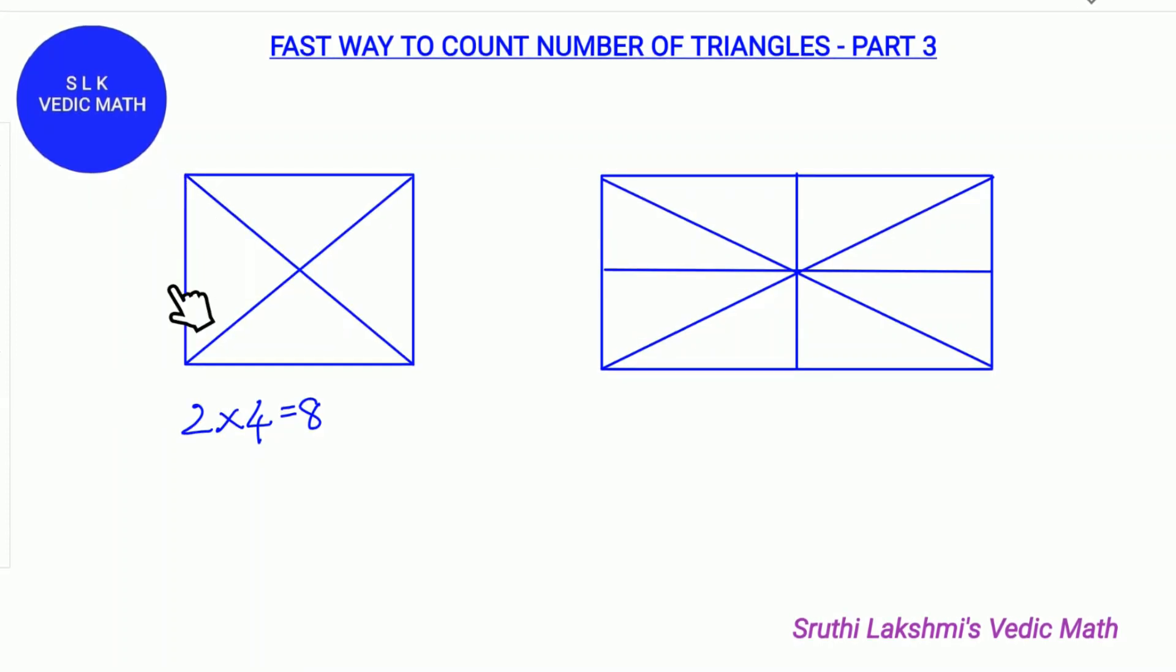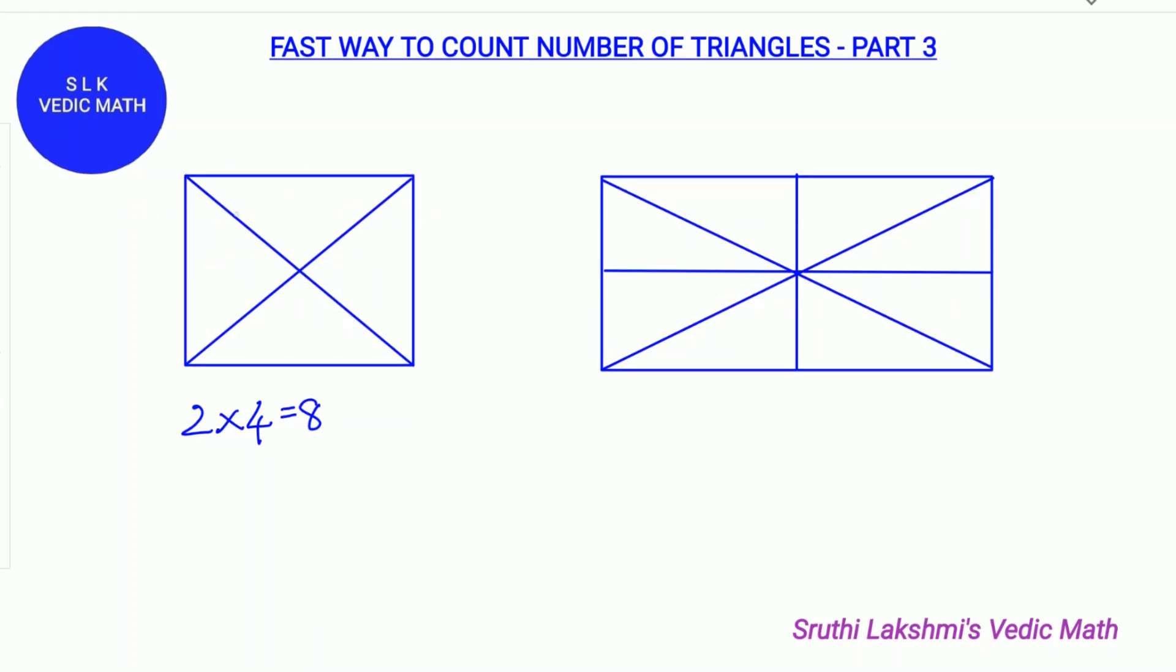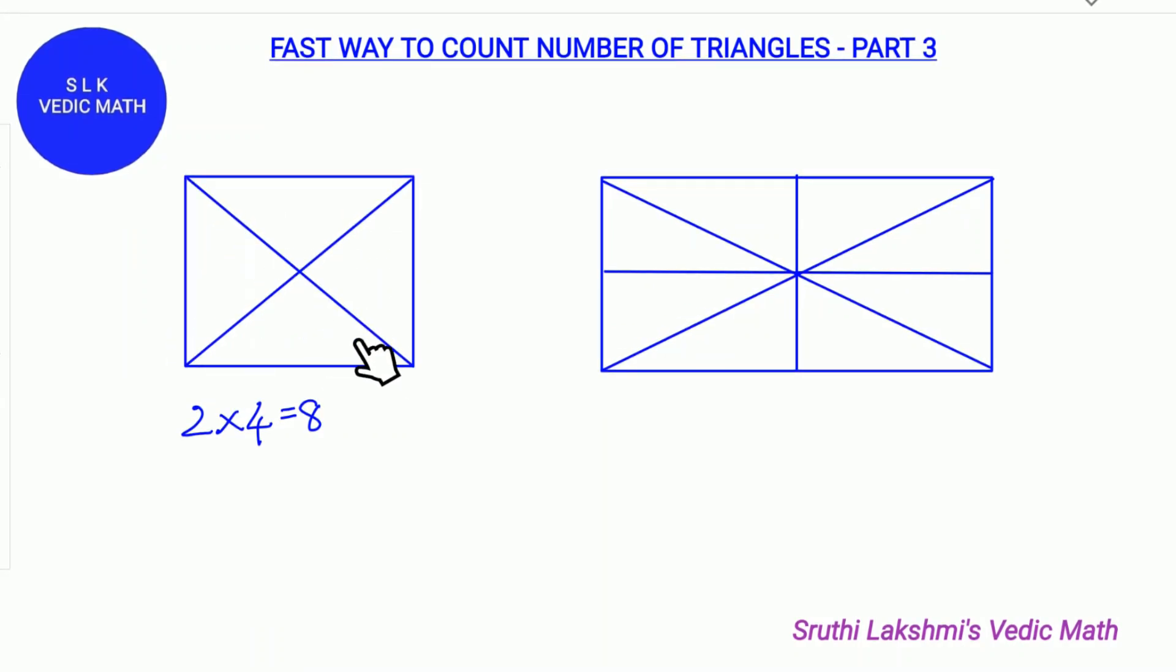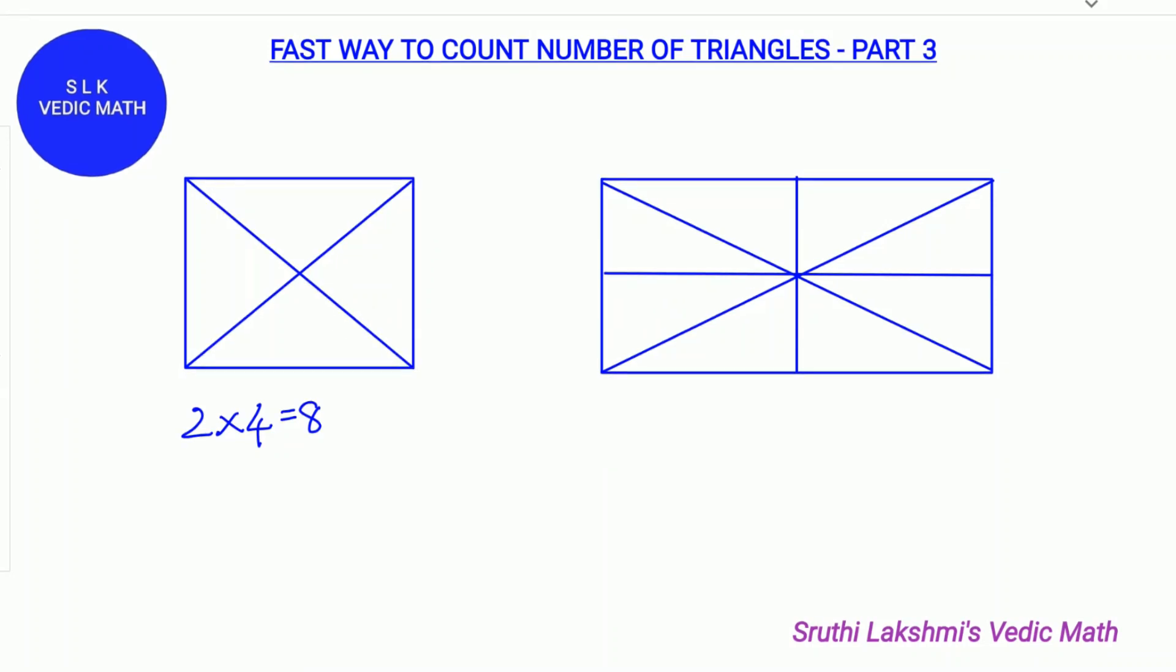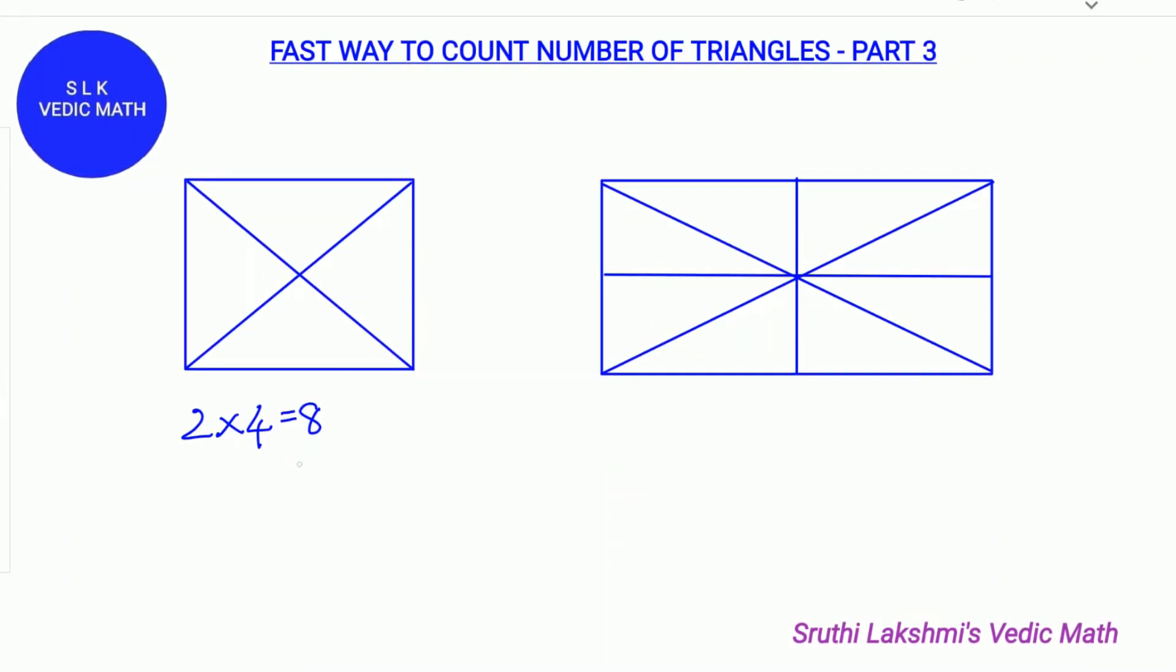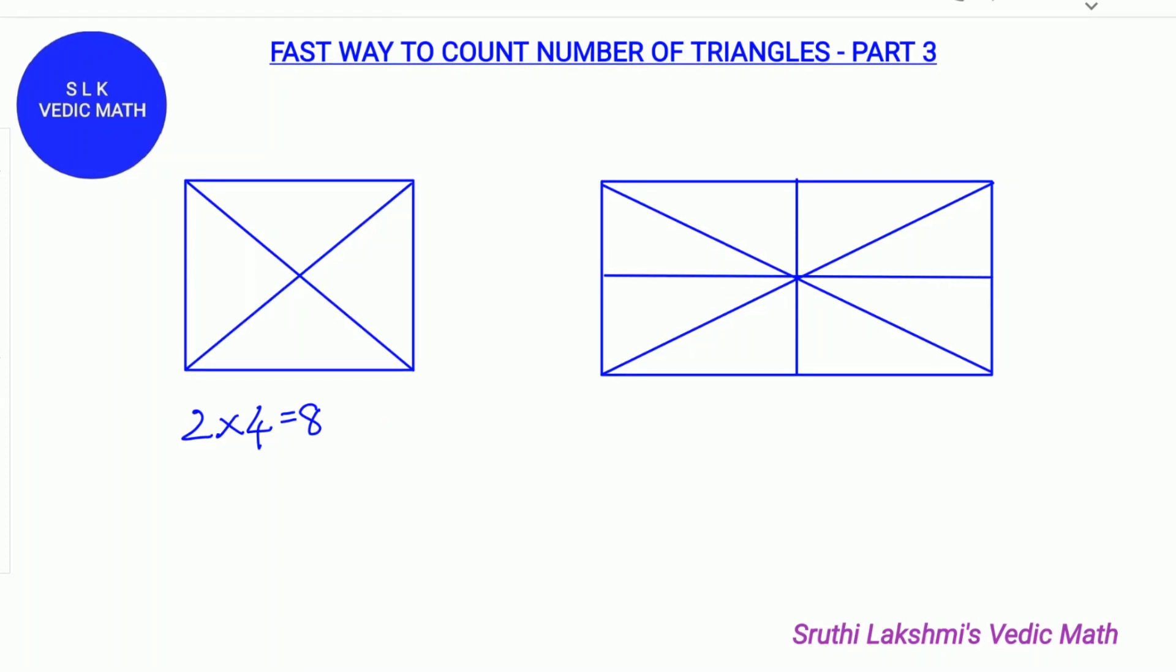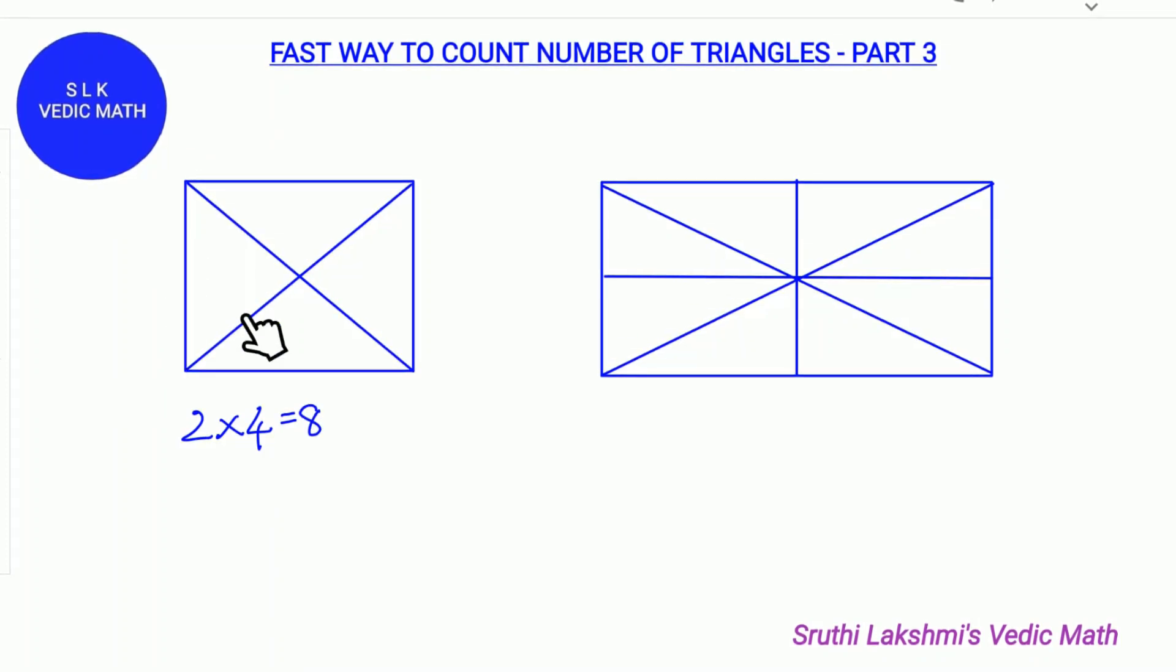Let's see how. 1, 2, 3 and 4, 5th, 6th, 7th and 8th. This is how we got 8 triangles in this square.